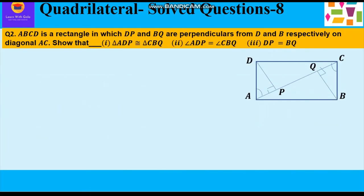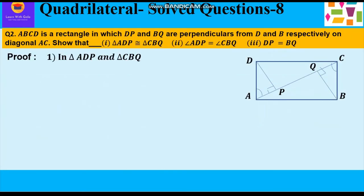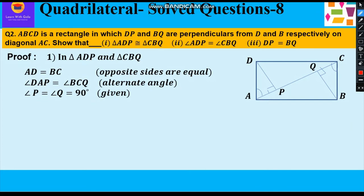Let's start with the solution. In triangle ADP and triangle CBQ, if you observe, AD is equal to BC because opposite sides of rectangle are equal.